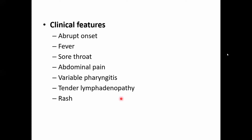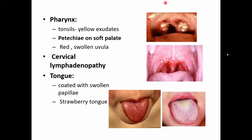There is an abrupt onset. The child presents with high-grade fever, sore throat, and some may present with abdominal pain. Most present with pharyngitis, with cervical lymphadenopathy — the cervical lymph nodes are enlarged. There is also a typical rash. To summarize: remember high-grade fever, pharyngitis, and a typical rash.